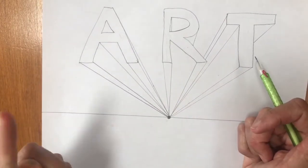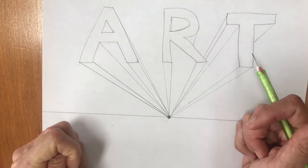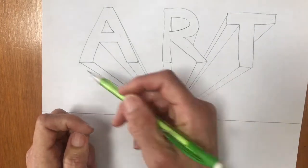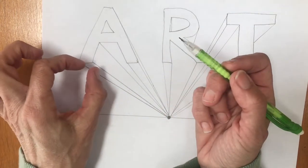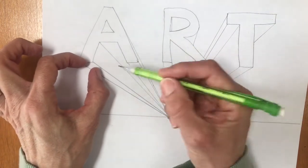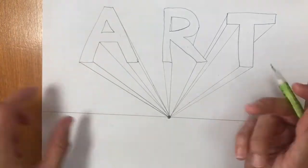I am going to show you one more thing you could do if you wanted to but it's a little bit tricky. I'm going to show you how to make it look like the letters stop like they're 3D but they don't go all the way to the vanishing point. We did this with our shapes.